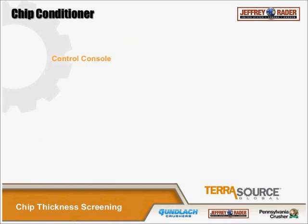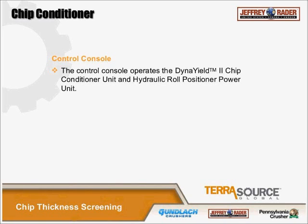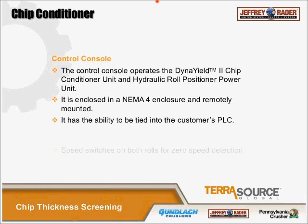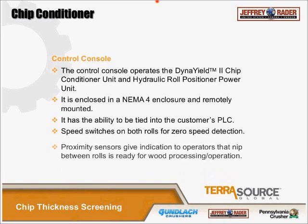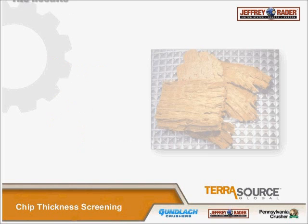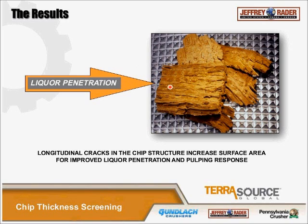The control console operates the Dyna yield conditioner and hydraulic power roll positioner power unit. It's enclosed in a NEMA 4 enclosure, remotely mounted, and can be hooked into the company's PLC system. There are speed switches on both rolls for zero-speed detection, and proximity sensors indicate to operators that the nip between rolls is ready for wood processing. When you set the stops and run the roll into position, the proximity sensor confirms you're ready to go — important because you don't want to be running chips with the rolls wide open during maintenance.